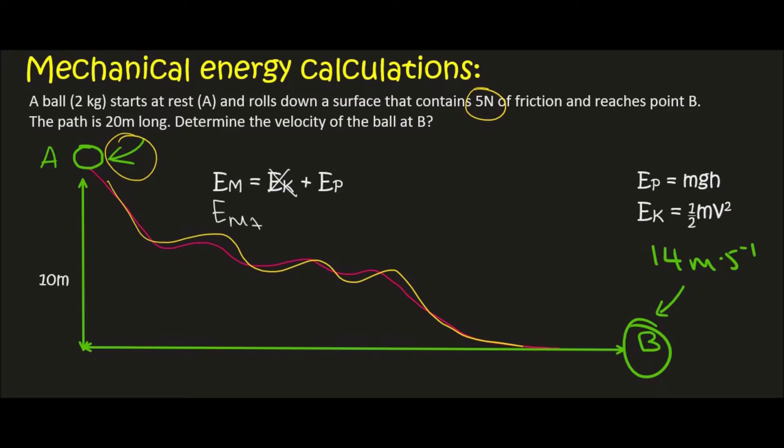So the mechanical energy at A is going to be equal to the potential energy at A, which is its mass times gravity times the height of A. And so the mass is 2, gravity is 9.8, and its height is 10. And so we end up with 196 joules. That is what we had in the previous question as well. Okay, so this object has 196 joules of energy at A.